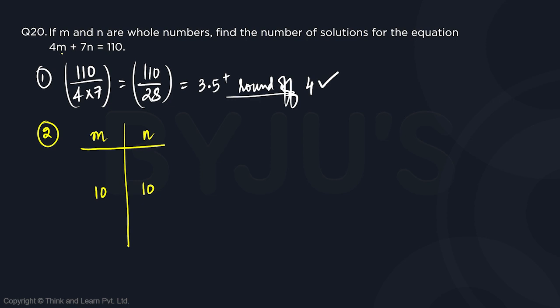Now, because m will change by 7 and n will change by 4. So if m increases, n decreases. Or if n increases, m decreases. This is true for all linear equations in two variables.